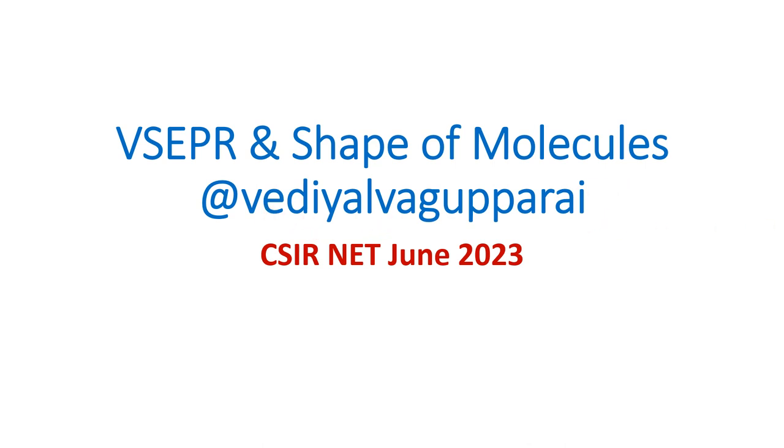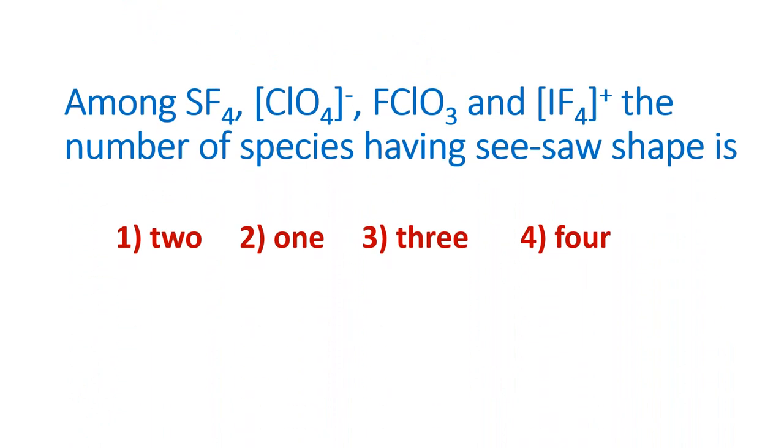Let us see the question. It is a very simple question. A set of molecules are given: SF4, ClO4 minus, FClO3, and IF4 plus. These are the four molecules that are given.